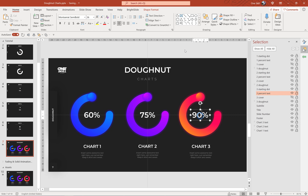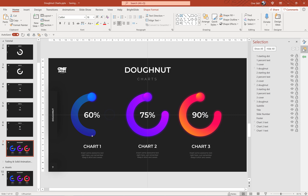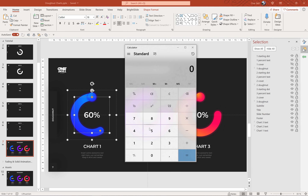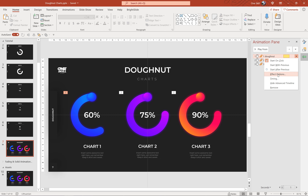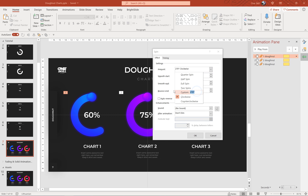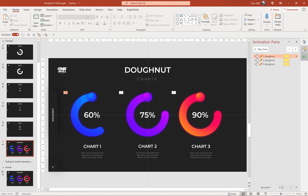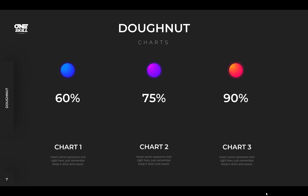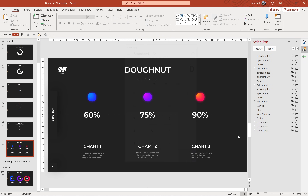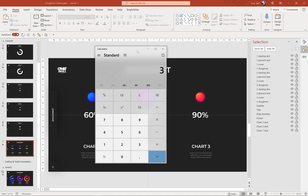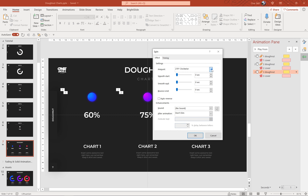Currently we have three charts all at 75%. Let's edit them to be 60%, 75%, and 90%. For the 60% chart, use the yellow handle to set the arc length, then multiply 360 × 0.6 = 216 degrees. Go to Donut 1 Effect Options and insert 216 for the spin animation. For the 90% chart, multiply 360 × 0.9 = 324 degrees. Go to Donut spin animation number three and insert 324. Also update the text boxes to match the new percentages.